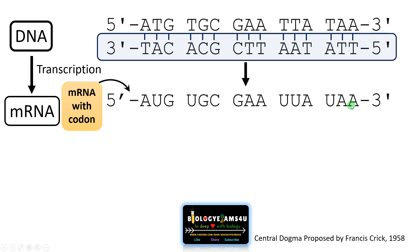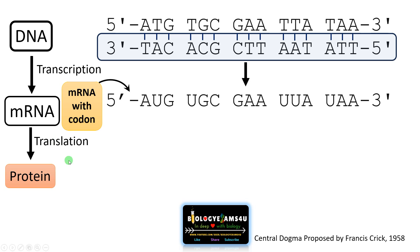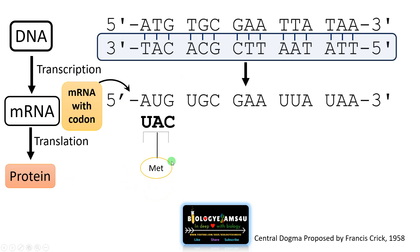For example, UAA is a stop codon — it doesn't code for an amino acid. It signals the stopping of the translation process or protein synthesis as it doesn't code for any amino acid. Now this mRNA is translated to proteins — AUG is translated to an amino acid. During that process, tRNA acts as an adapter molecule.